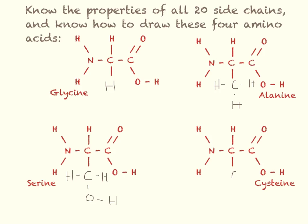Cysteine is interesting — similar to serine, almost the same shape, except it's got a sulfhydryl group, one of the seven functional groups you are supposed to know. Sulfhydryl groups are very important in proteins because they can form disulfide bridges, so two cysteines can link together to help hold that protein chain together. I want you to know these four amino acids, be able to draw their structures, and then be able to look at other amino acids and tell me something about the properties of the side chains.